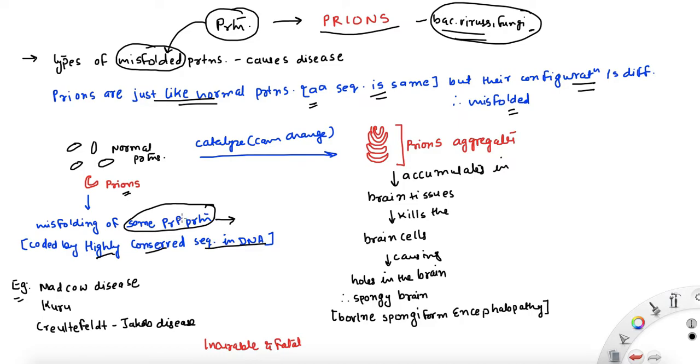So it is misfolded at the same PrP protein that is coded by highly conserved sequence in our DNA. That's why I say it is widely spread among all of us. But wherever this misfolding happens, that's when prions exist. But this is a very rare phenomenon that happens and we don't know much about why it happens.